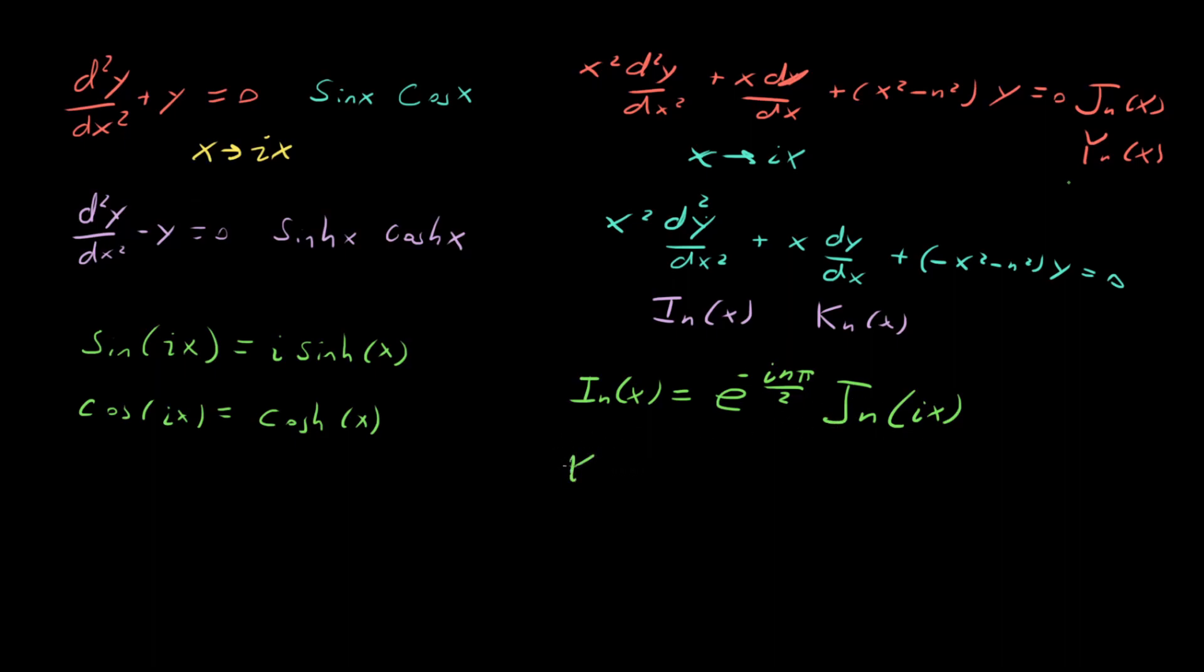And then K_n(x), this is equal to, and now this one's a little strange. This is equal to (π/2)e^(inπ/2) times [iJ_n(ix) - Y_n(ix)].